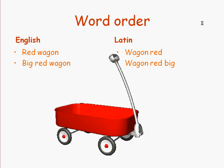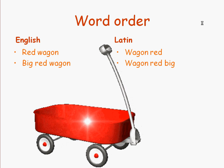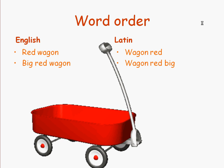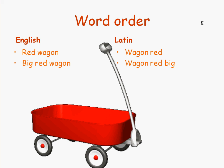Let's look at another example: "big red wagon." In Latin, that would be rendered as "wagon red big." So the modifiers come after the term that's being modified.